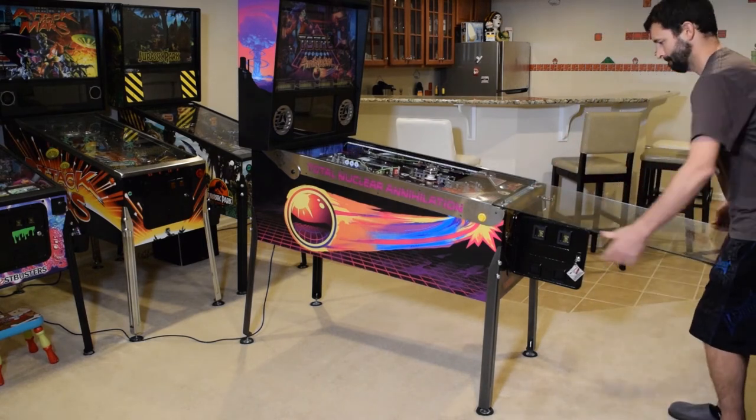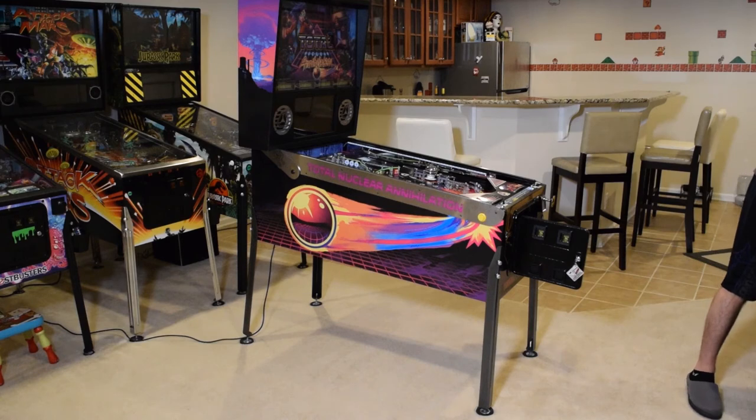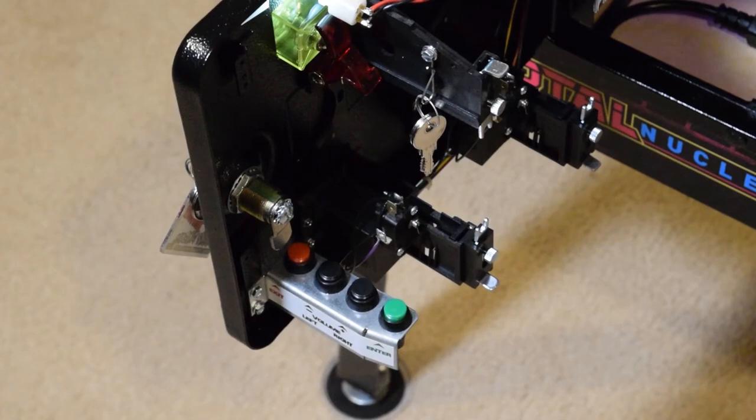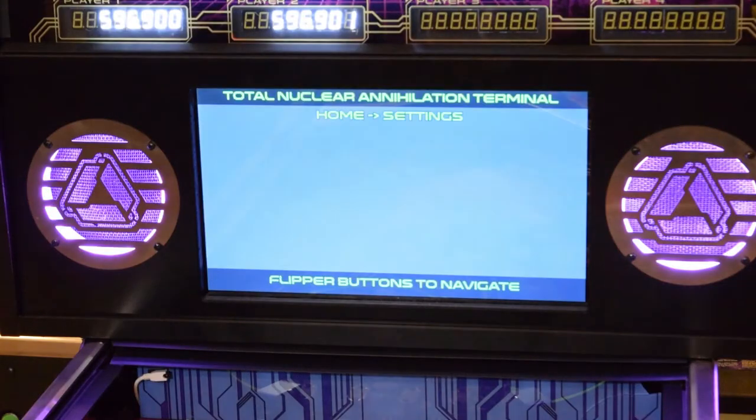Open the coin door, remove the lock down bar, and remove the playfield glass. Go ahead and turn on the pinball machine. Using the coin door buttons, press the menu button and use the other buttons to navigate to the switch test menu.